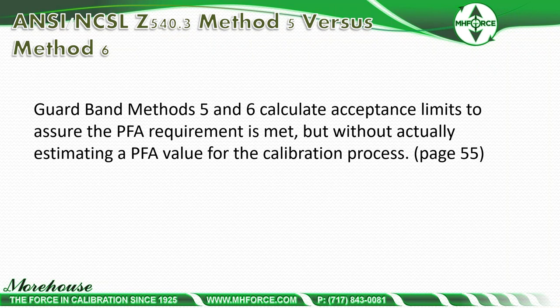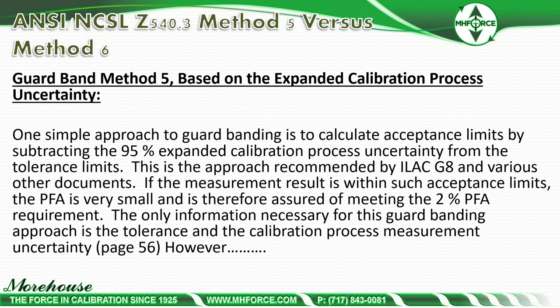Methods 5 and 6 calculate acceptance limits to assure the PFA requirement is met without actually estimating a PFA value for the calibration process. Method 5 is based on expanded calibration process uncertainty — a simple approach where acceptance limits are calculated by subtracting the 95% expanded calibration process uncertainty from the tolerance limits. This approach is recommended by ILAC G8. If the measurement result is within such acceptance limits, the PFA is very small and the 2% PFA requirement is assured. The only information necessary is tolerance and calibration process measurement uncertainty.